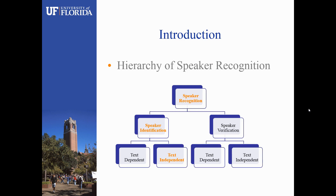Here is the hierarchy of speaker recognition. Basically, speaker recognition can be divided into two parts: speaker identification and speaker verification. For speaker identification, the task is to tell who the testing speaker is, and compare the testing speaker feature data with the whole training data library. For speaker verification, it performs mainly like a password that can tell whether the test speaker is authentic or fake. Another classification is text-dependent or text-independent. For text-dependent, the training stage and testing stage need to be identical, and for text-independent, there is no requirement on the text. In this project, we mainly focus on text-independent speaker identification.